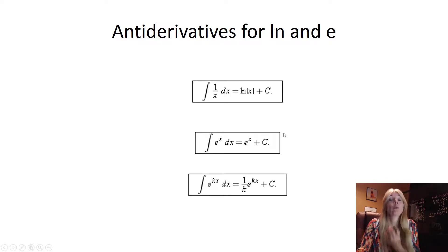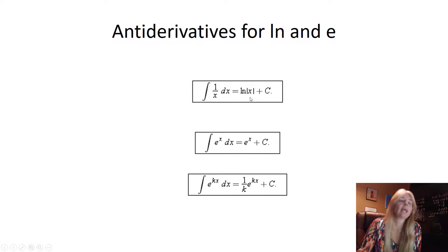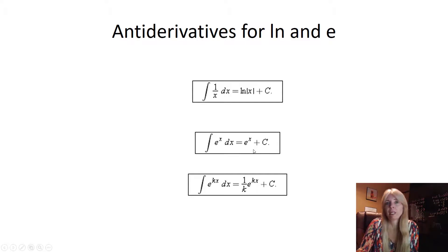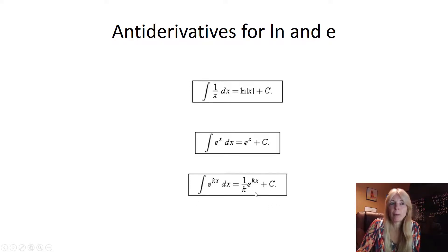Now for ln and e — remember you're working backwards. The derivative of ln(x) is 1/x, so the antiderivative of 1/x is ln(x). The antiderivative of e^x is e^x, since its derivative is itself — lovely! For e^(kt), when you took the derivative you brought the k down, so working backwards you divide by k.